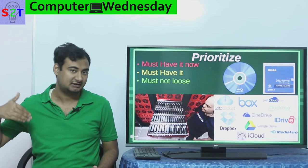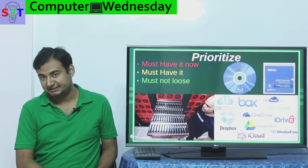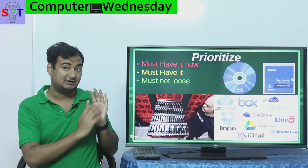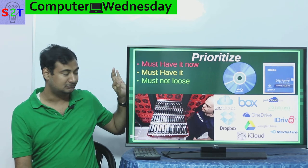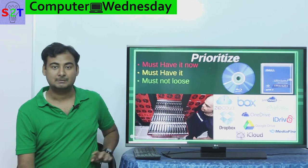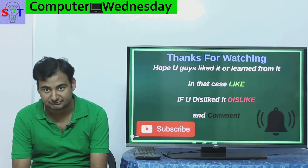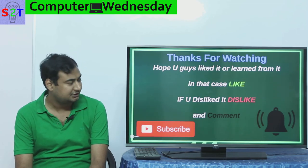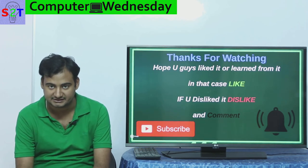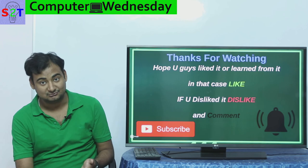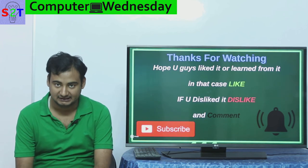Please prioritize your data. Not every piece of data needs to be on your mirror server, and not everything that needs archiving needs to be on your live server. Prioritize based on the three criteria: must have it now, must have it but won't lose it, and must not lose it. I hope you learned from this presentation on backup types. If you liked it, leave a like; if not, dislike it and leave a comment on what you want to see next on Computer Wednesday. Thanks for watching.